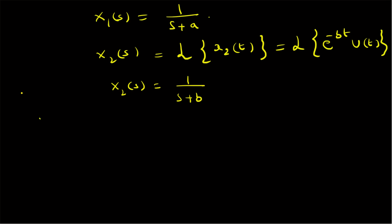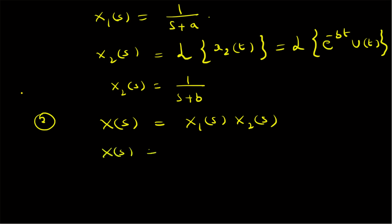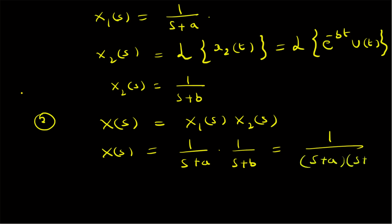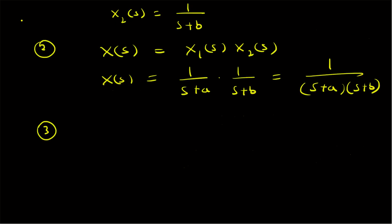Step two: we have to find the product of these two Laplace transforms. X(s) = X1(s) · X2(s). Therefore X(s) = 1/(s + a) · 1/(s + b), which is simply 1/[(s + a)(s + b)].